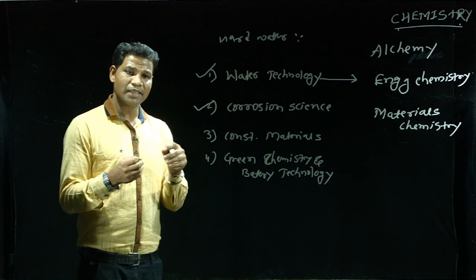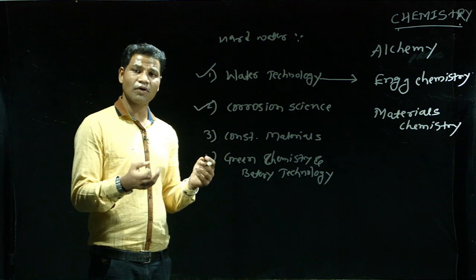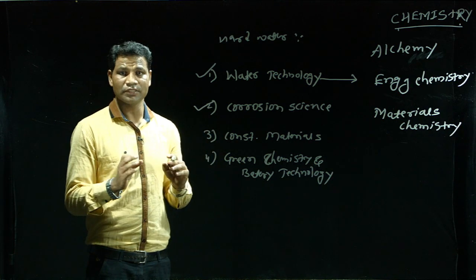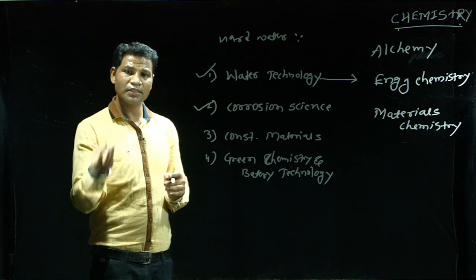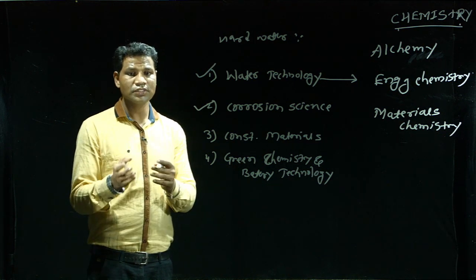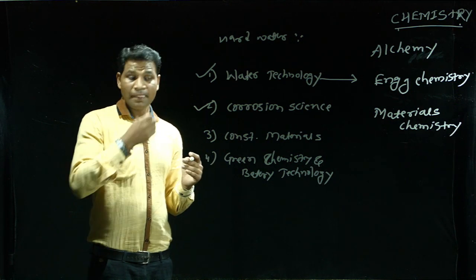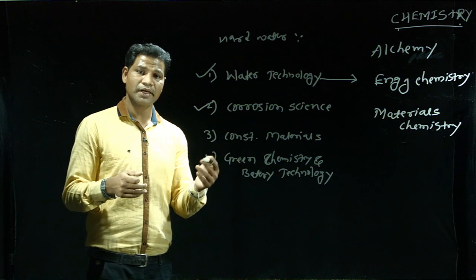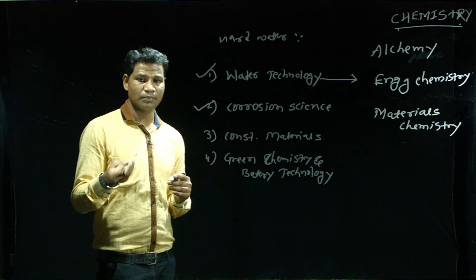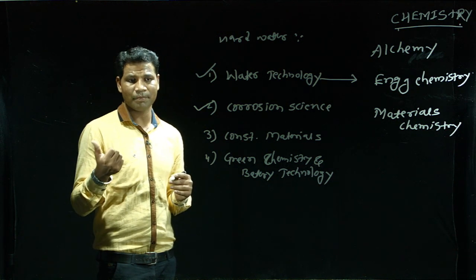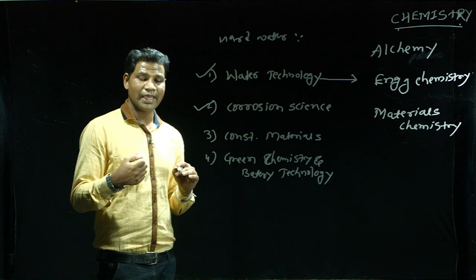A considerable amount of energy has to be supplied to extract metals — this is called extractive metallurgy, which is essentially reduction. Corrosion, on the other hand, is oxidation. Hence, corrosion is the reverse of extractive metallurgy. Factors which influence corrosion include: nature of metal, purity of metal, and nature of corroding environment.